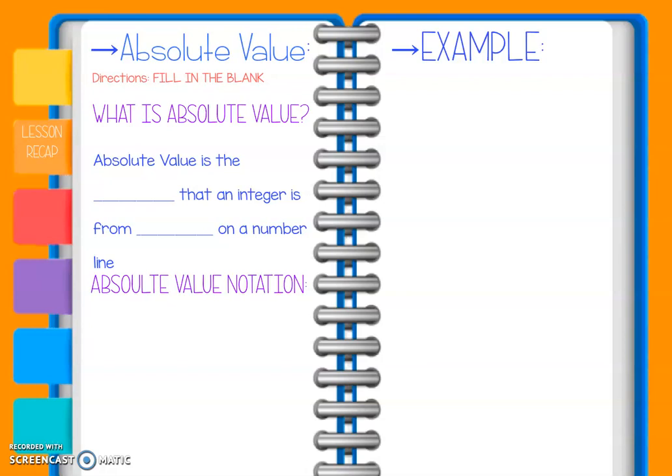All right guys, so today in class we talked about absolute value. So just for a quick recap, what is absolute value? Absolute value is the distance that an integer is from zero on the number line. We talked about in class how distance can never be negative — you can't travel a negative distance. So anytime we're talking about distance, it's going to give us a positive value.